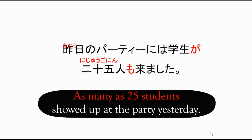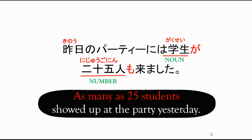Another example: as many as 25 students showed up at the party yesterday. The noun here is gakusei, and the number is nijuugonin. We added mo to state 'as many as'. That's the meaning and usage of particle mo in a sentence.